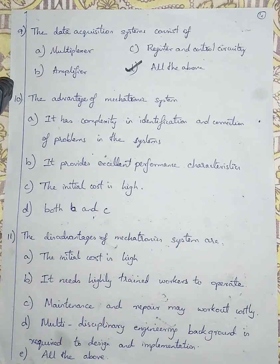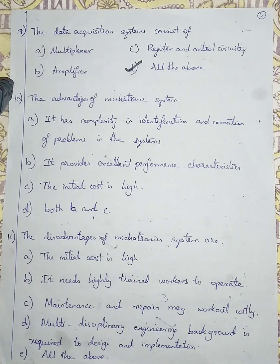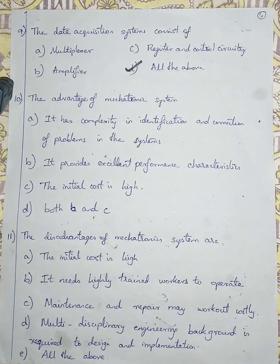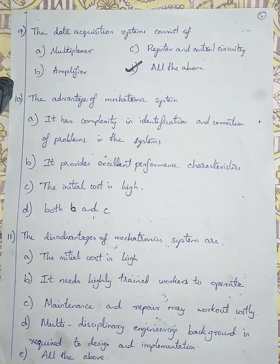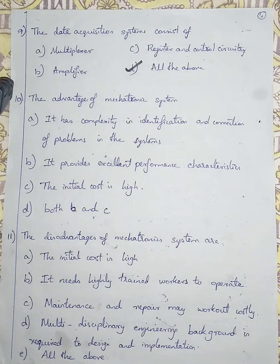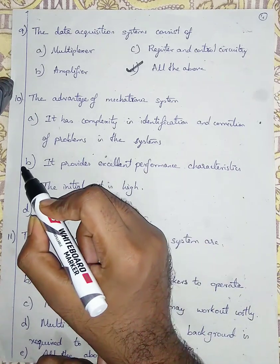Question number 10: The main advantage of mechatronic systems. Option A is complexity in identification and correction of problems. Option B is it provides excellent performance characteristics. Option C is initial cost is high. Initial cost is high and complexity in identifying problems are not advantages. Option B — it provides excellent performance characteristics — is definitely an advantage. So the answer is option B.